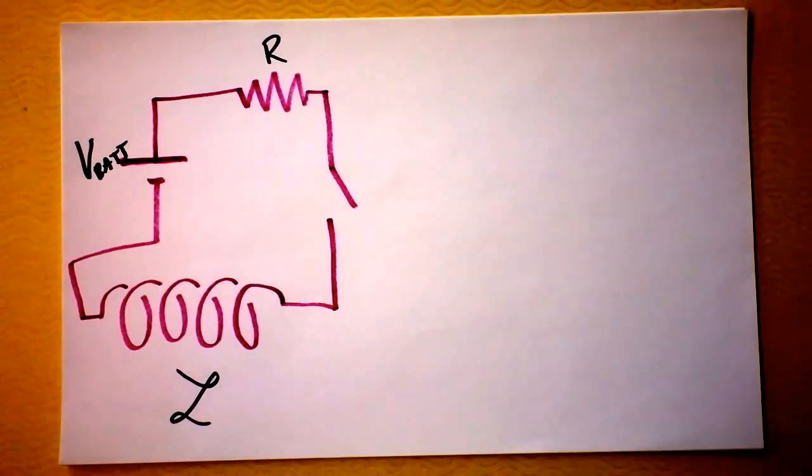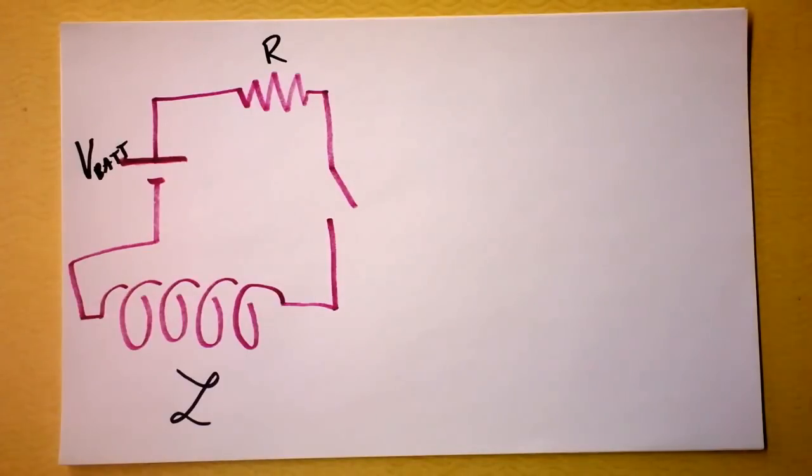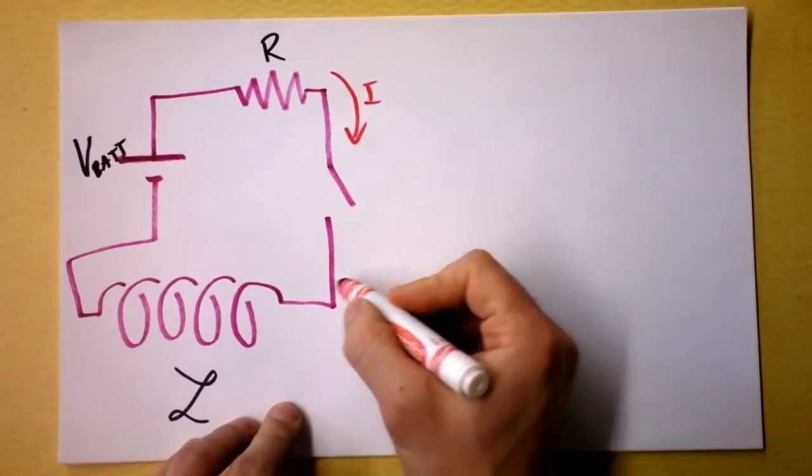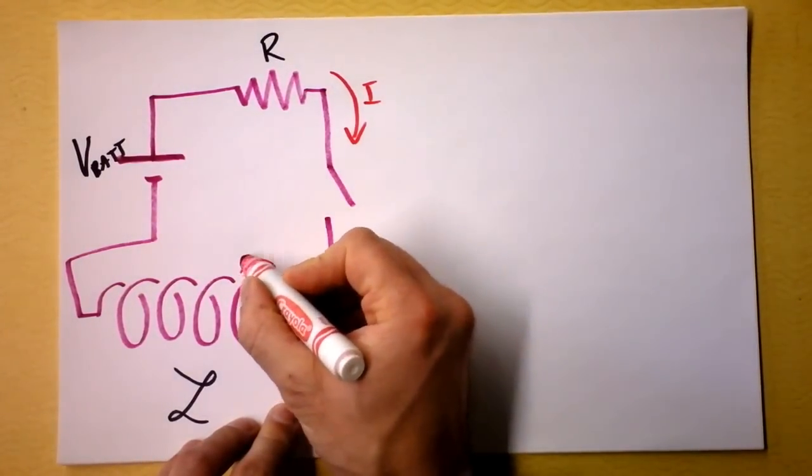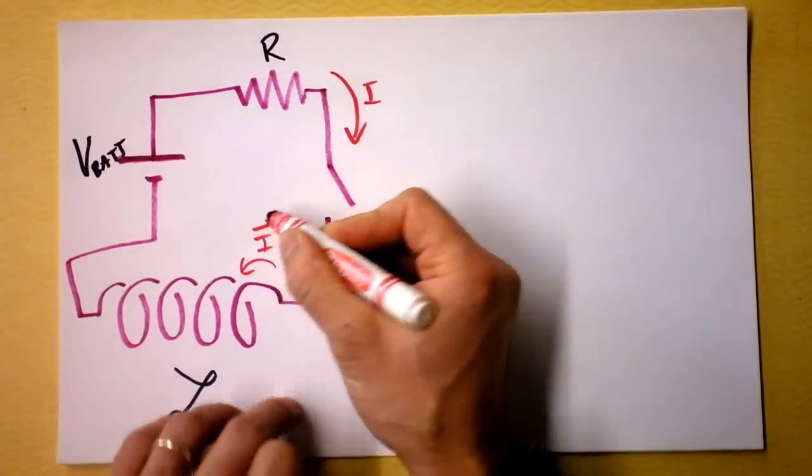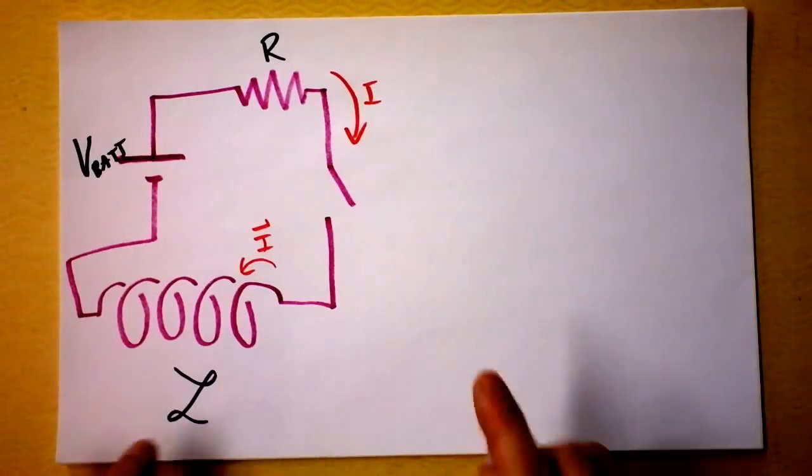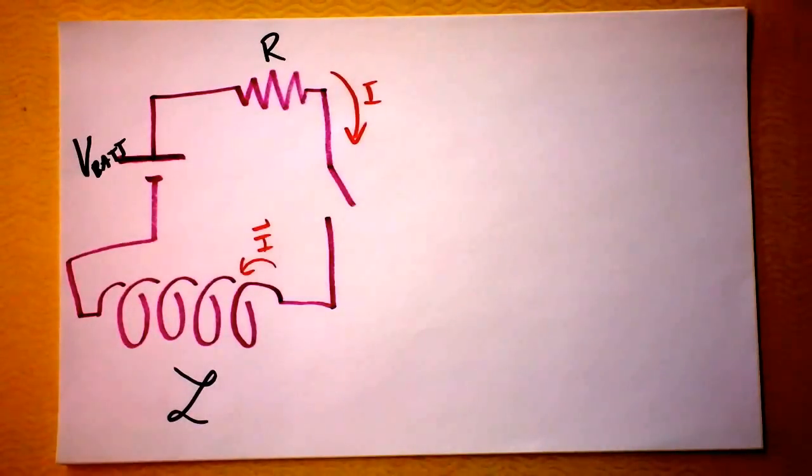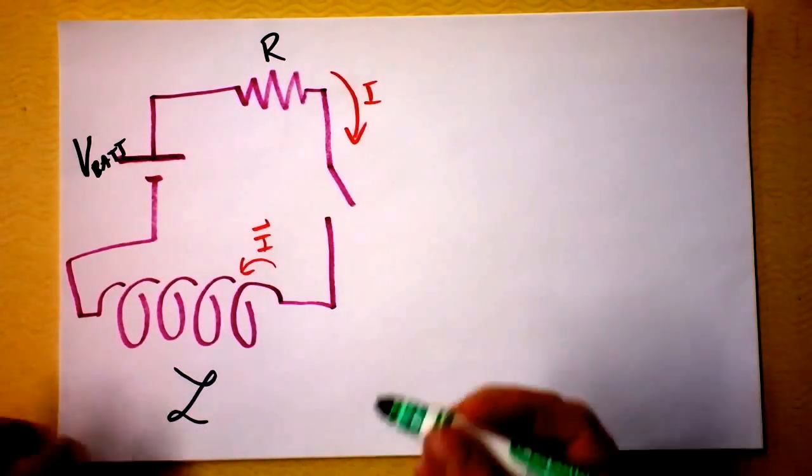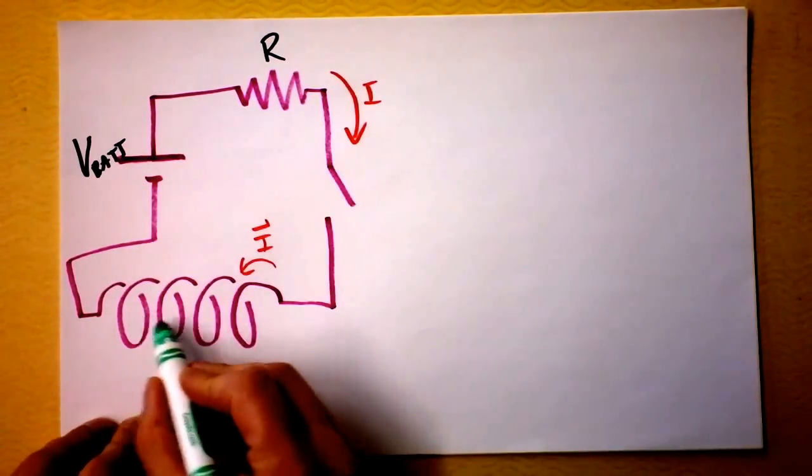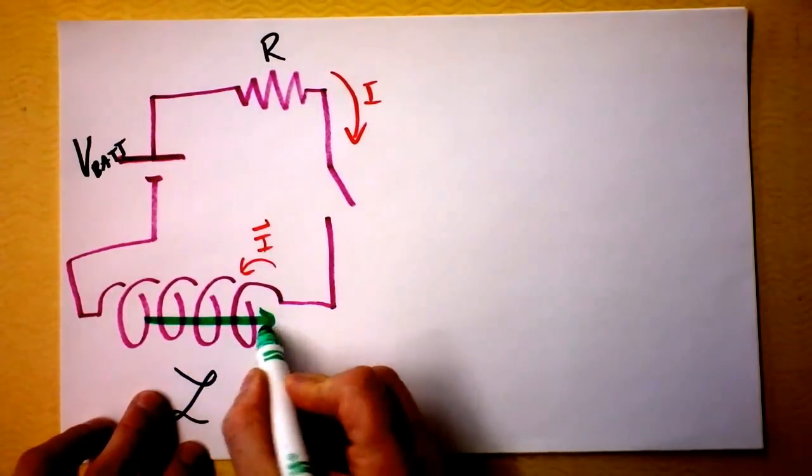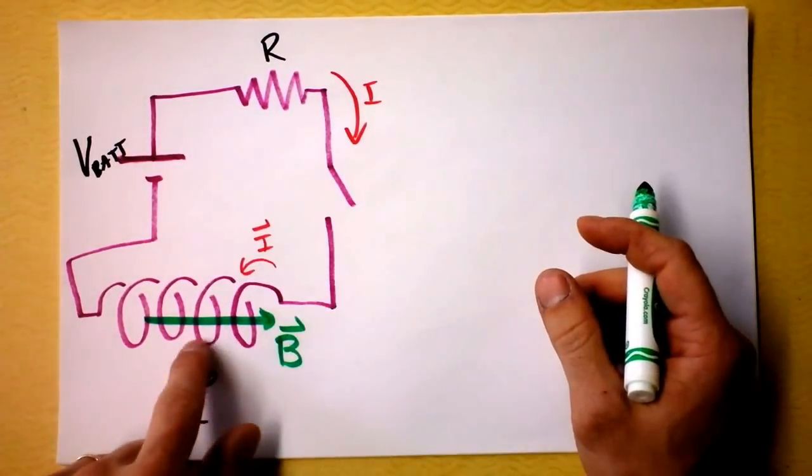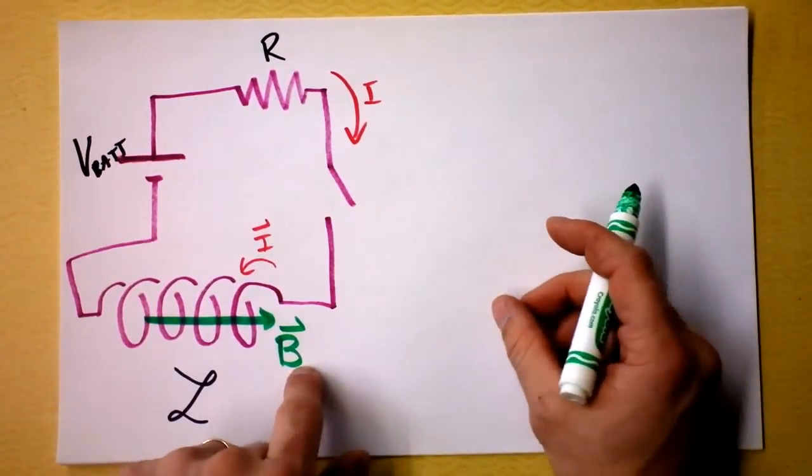When I close the switch, current will begin to flow which direction? Of course, current will flow this direction, which means that current in the solenoid will be coming around this direction, going out in front. If current goes through a solenoid, what happens inside the solenoid? A magnetic field. Let's go green for the magnetic field. The magnetic field in this case would be this direction in the middle of the solenoid, and as the current gets bigger and bigger, the field will be getting bigger and bigger.